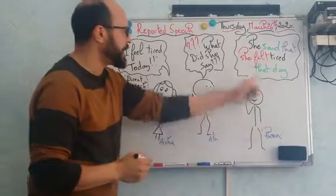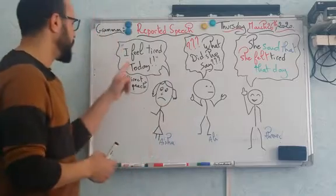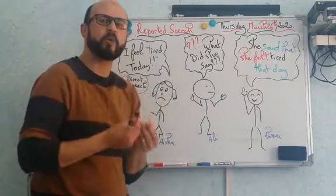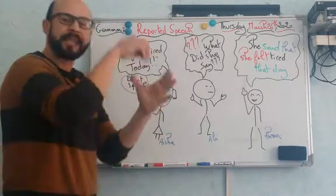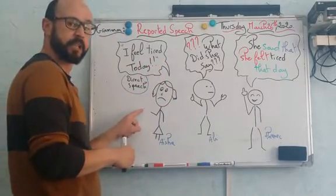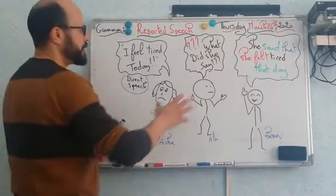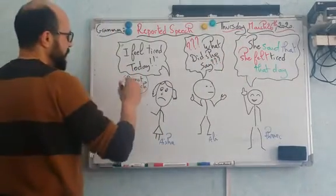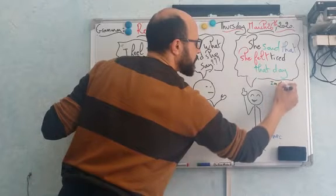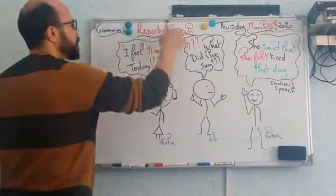Now, what is Ahmed doing here? He is reporting — he is repeating the words of Aisha but in his own words. The content is Aisha's content, but the words are the words of Ahmed. That's why you can see some changes here. This is what we call indirect speech or reported speech.